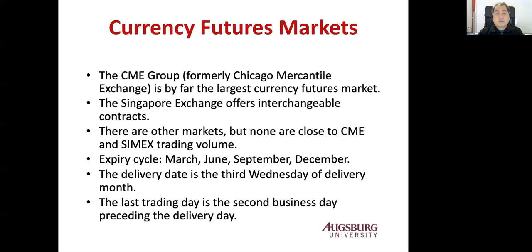The expiration cycle is March, June, September, and December — every three months. The delivery date is the third Wednesday of the delivery month. So the third Wednesday of March, June, September, or December will be the delivery date. The last trading day is the second business day preceding the delivery date.